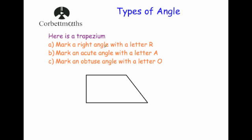Here's a trapezium. We've been asked to mark a right angle with the letter R. There are actually two right angles here — this right angle and this right angle. We could mark either one of them R, so I'm just going to put an R beside the top one here.